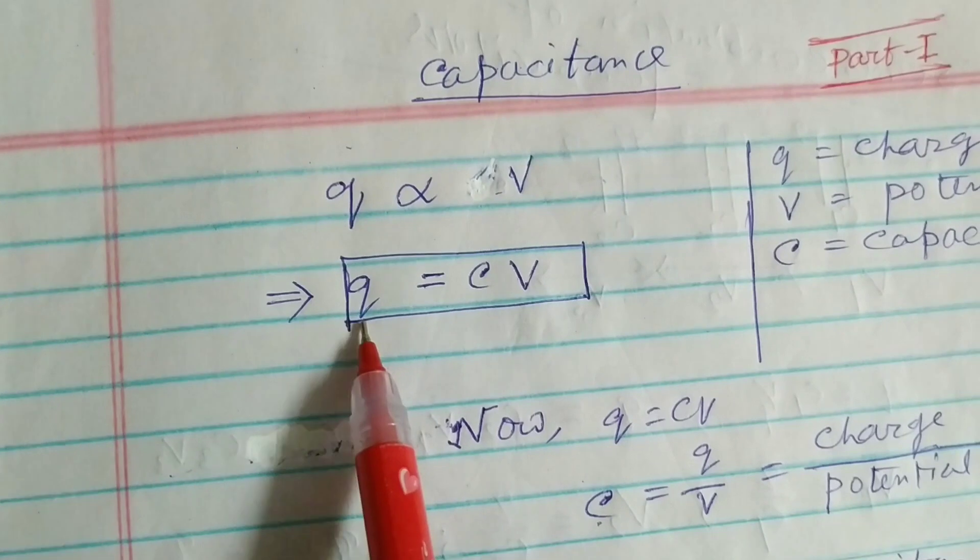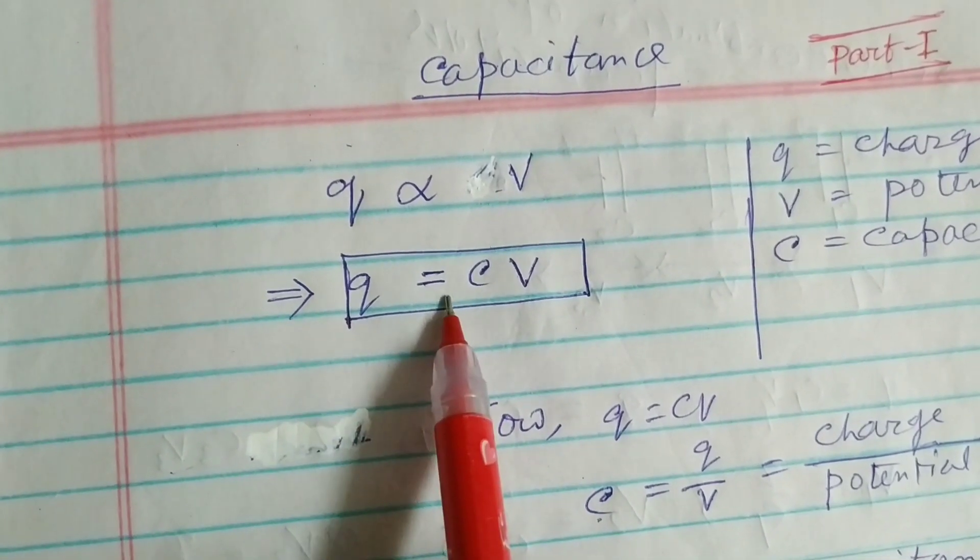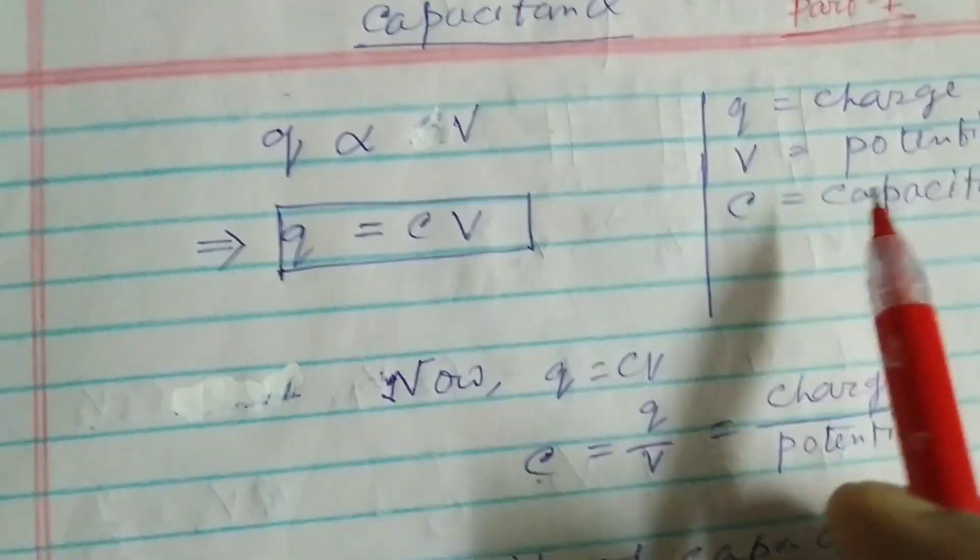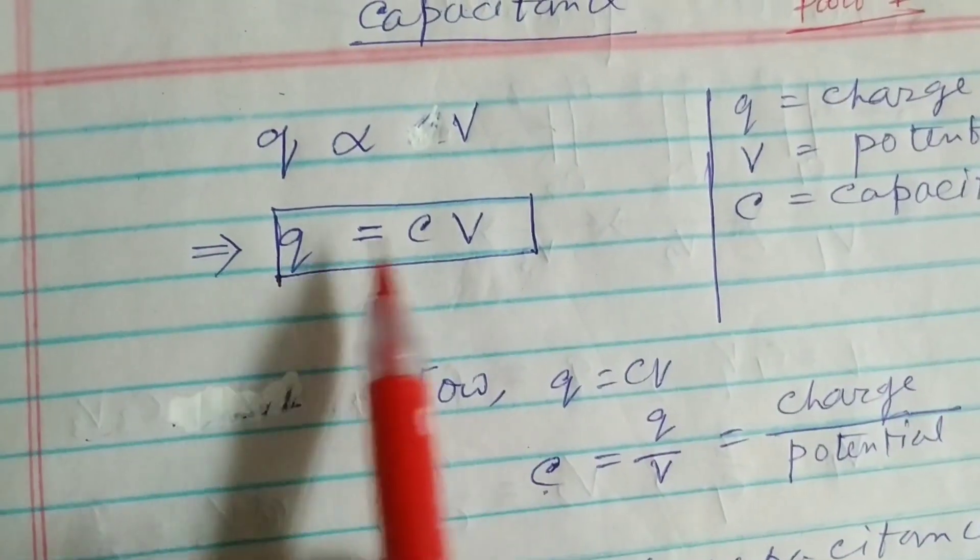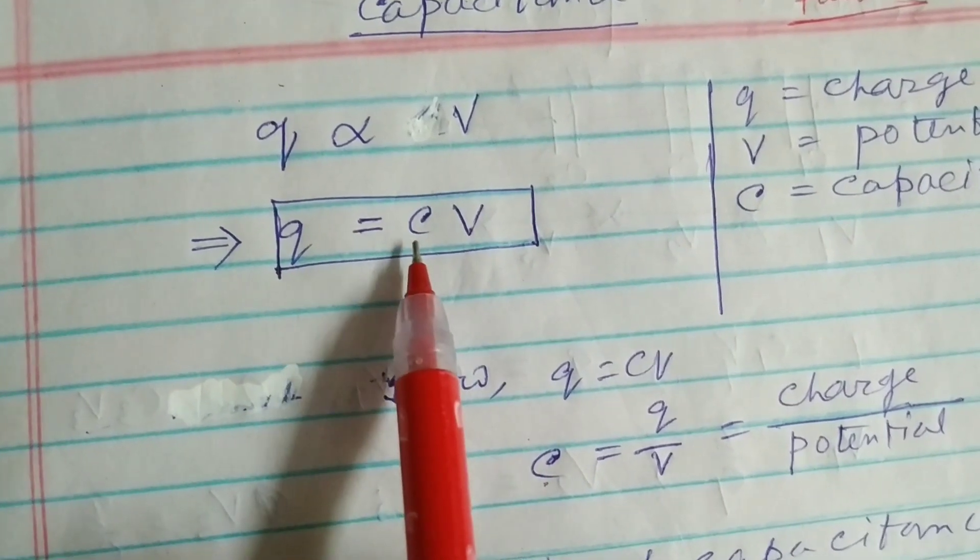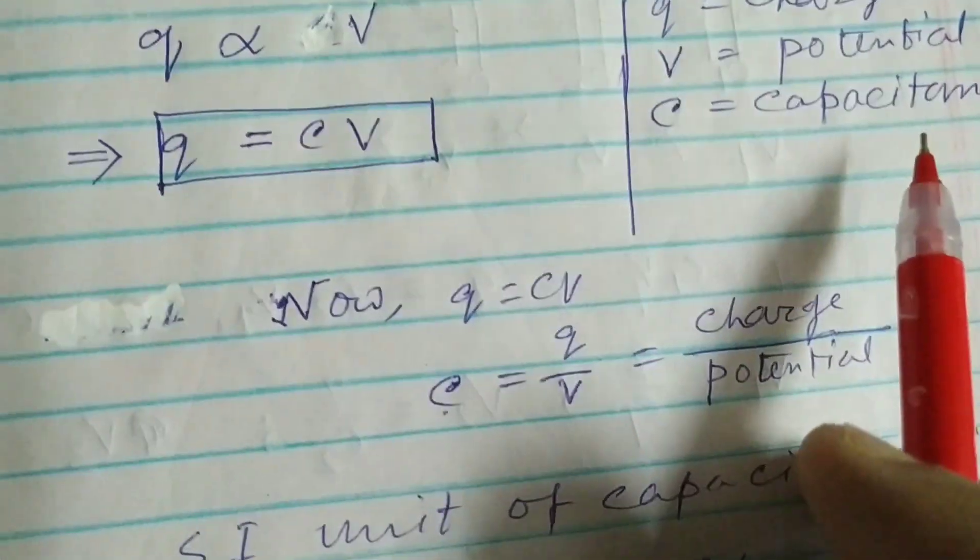Now Q is equal to some constant times V. That constant is called capacitance. So Q equals CV. Q varies with V and Q equals CV. C is the constant of proportionality and it is called capacitance.